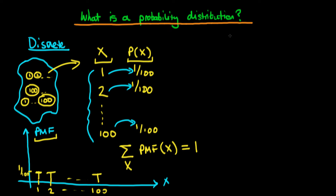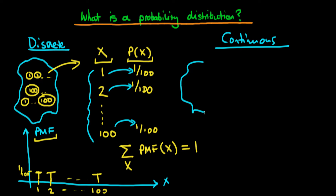What about the case of a continuous random variable? It's pretty similar, but there are a few key differences. The canonical example is: imagine we have the UK population and we're thinking about individuals' heights.